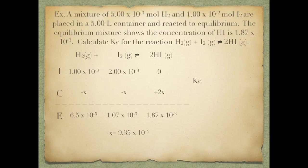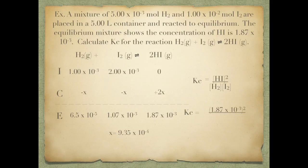Using these equilibrium concentrations, I can now calculate my Kc. Kc is going to equal the concentration of HI squared, divided by the concentration of H₂ times the concentration of I₂. I'm going to plug in these values: 1.87 times 10 to the negative third squared on top, and 6.5 times 10 to the negative fifth times 1.07 times 10 to the negative third on the bottom. What I end up calculating for Kc is 50.3.